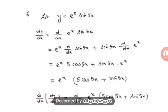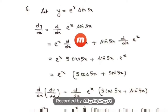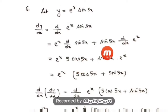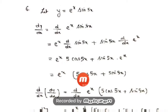Question number 6: y = eˣ·sin(5x). Taking the derivative using the product rule: dy/dx = eˣ·d/dx(sin 5x) + sin(5x)·d/dx(eˣ) = eˣ·5·cos(5x) + sin(5x)·eˣ. Simplifying by taking eˣ common: dy/dx = eˣ(5·cos 5x + sin 5x).